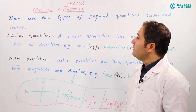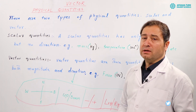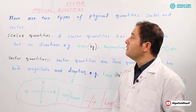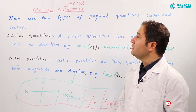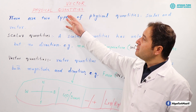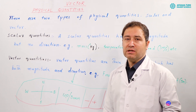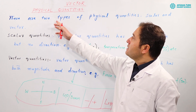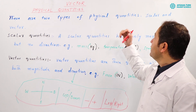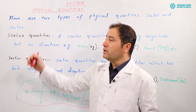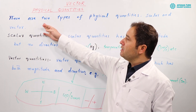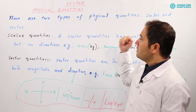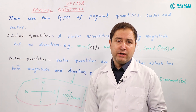Bismillahirrahmanirrahim. This is the first chapter for 11th class, which is called Vectors. In physics, we have two types of quantities: the first one is scalar quantity and the second one is vector quantity.